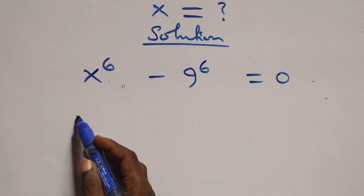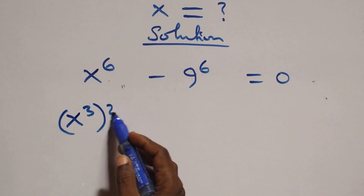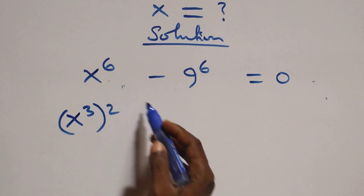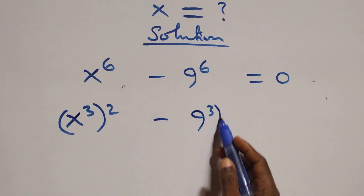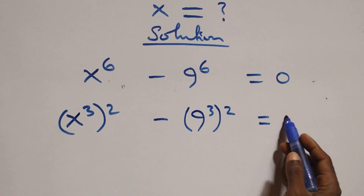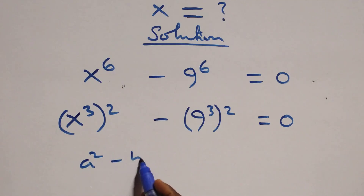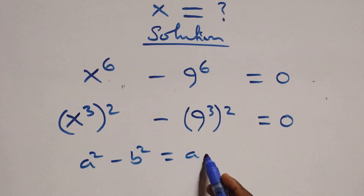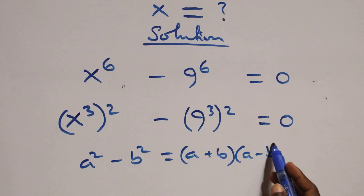The next step: we can write this as x raised to the power 3, all raised to the power 2 — since 2 times 3 equals 6 — minus 9 raised to the power 3, all raised to the power 2, equals to 0. This follows the identity a squared minus b squared, which is the same thing as (a + b)(a − b).